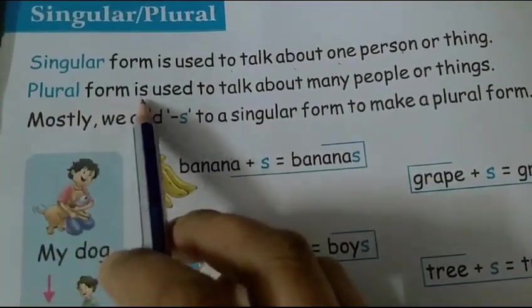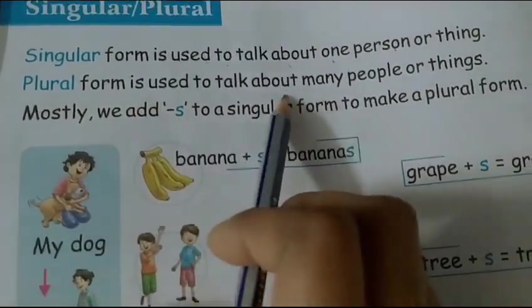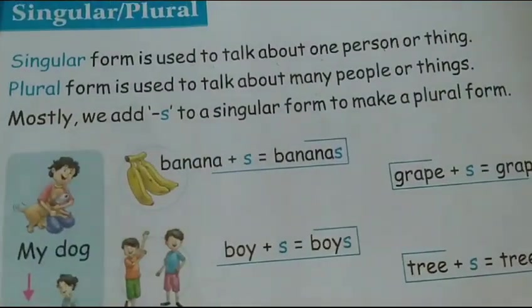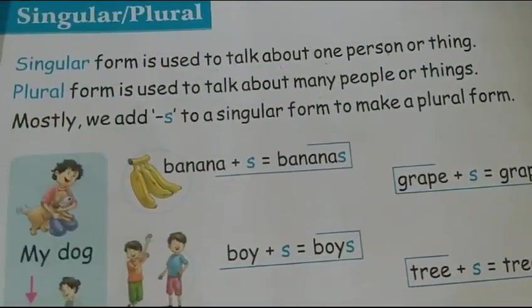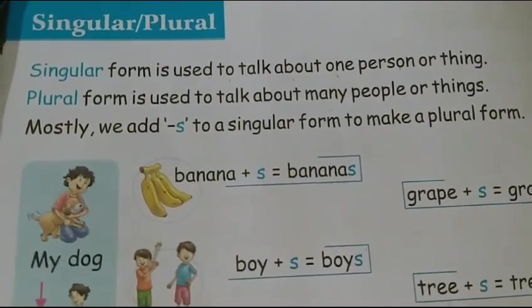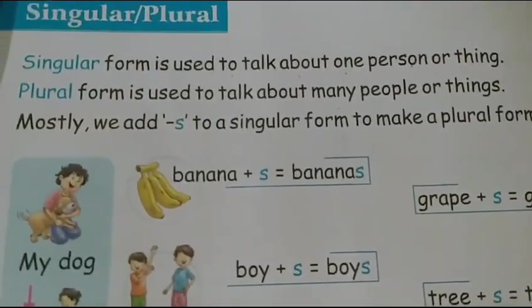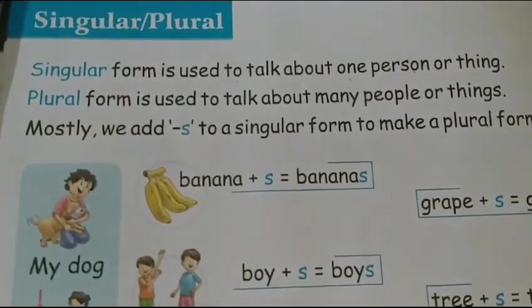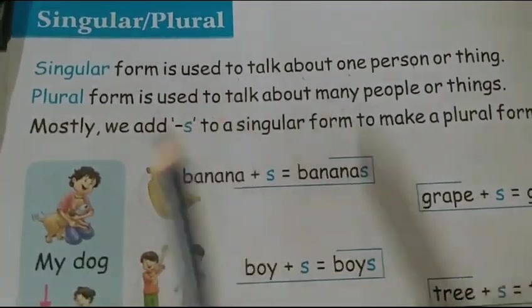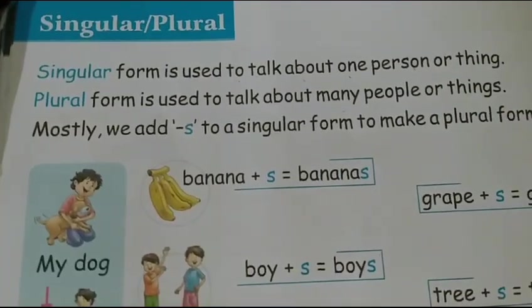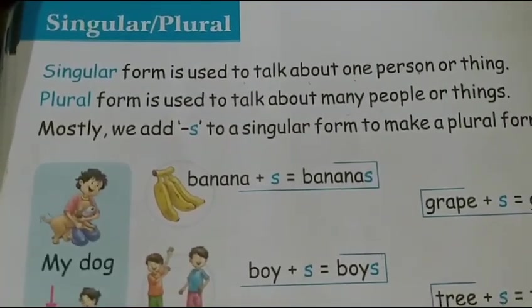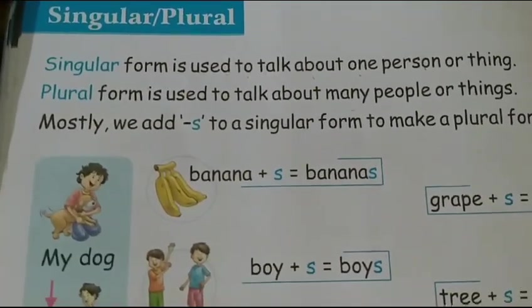Plural form is used to talk about many people or things. If you talk about plural form, then plural form is used only when we talk about more than one person or more than one thing. Singular is for one person, one thing; plural for many people and many things.